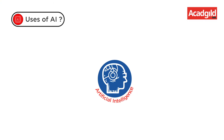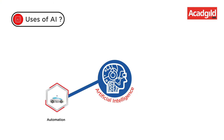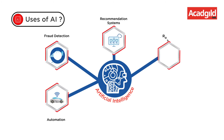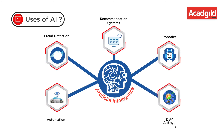Uses of AI: AI is used in automation of processes and products, fraud detection, recommendation systems, robotics, data analysis, and many other things.